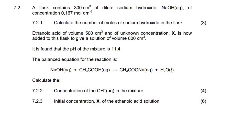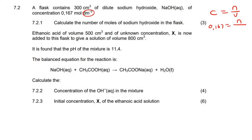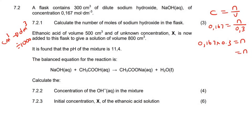A flask contains 300 cm³ of dilute sodium hydroxide at a concentration of 0.167 mol/dm³. The first question asks us to calculate the number of moles. We can use C = N/V, so N = C × V. The volume must be converted from cm³ to dm³ by dividing by 1000, giving 0.3 dm³. Multiplying 0.167 by 0.3 gives us 0.05 moles.